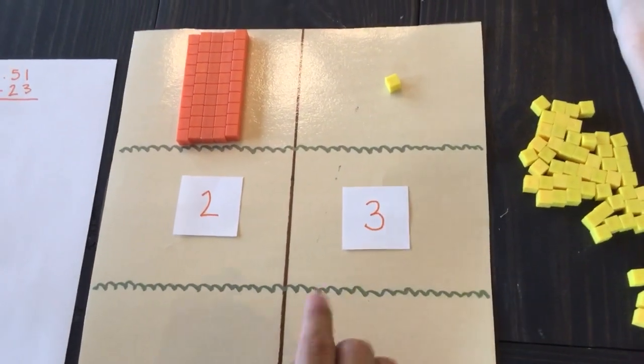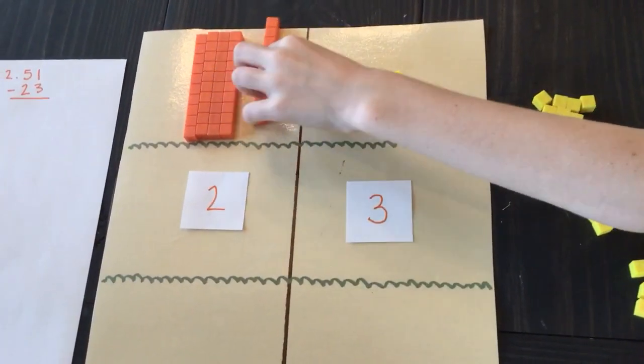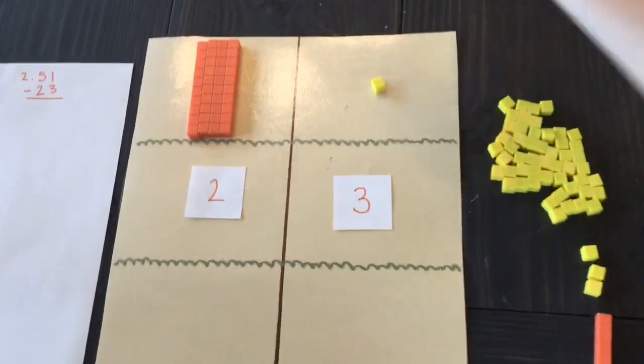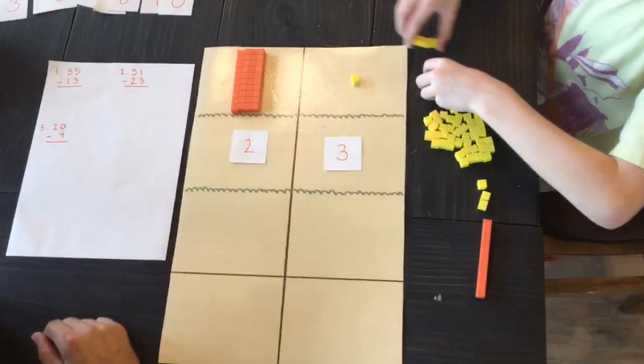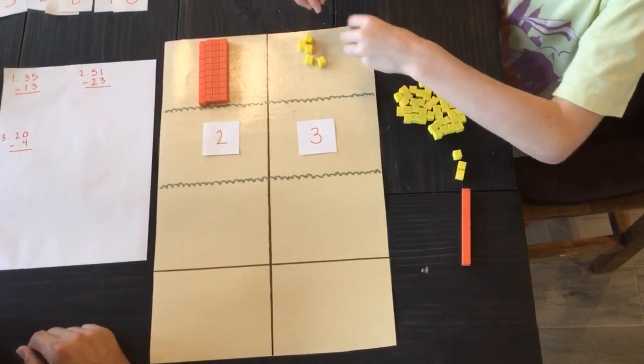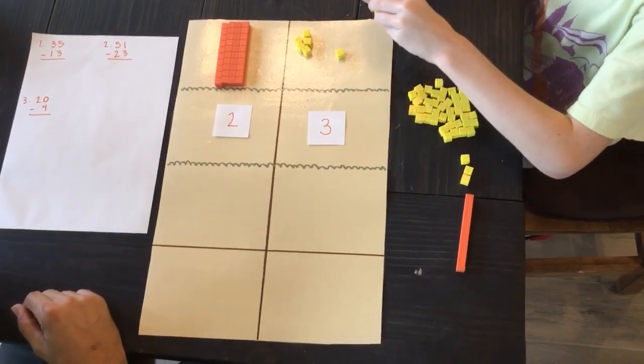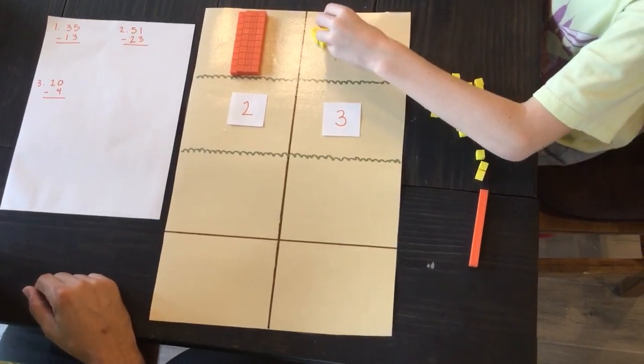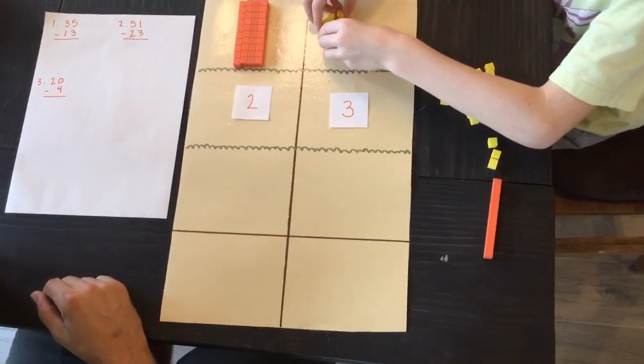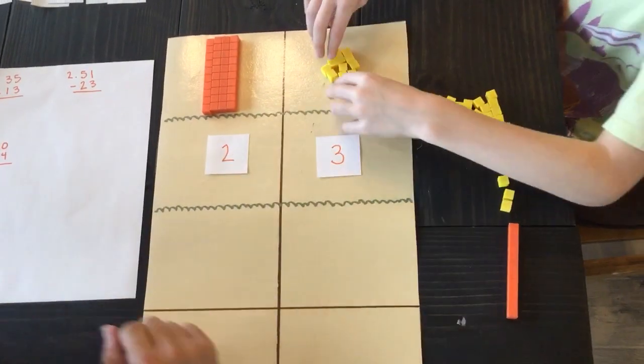In our ones place, do we have enough to take away three right now? No, we do not. So we take away one of the tens and count up a little bit of ten more. There's four, five, six, seven, eight, nine, ten. Very good. So we borrowed a group of ten. And we still have our group of ten over here.